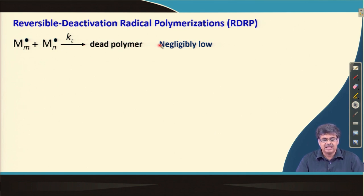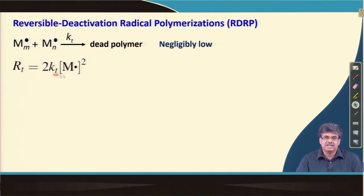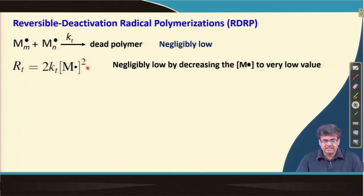So in practice, we can bring this termination reaction down to a negligibly low value. We know the termination reaction is proportional to the square of the concentration of the radical. So if we somehow decrease the concentration of radicals in the system, then the termination reaction will come down drastically. We can bring down this termination reaction by decreasing the concentration of radical to a very low value.